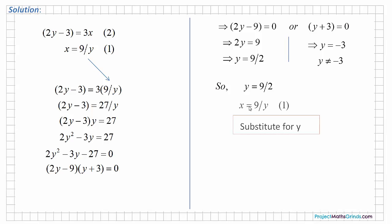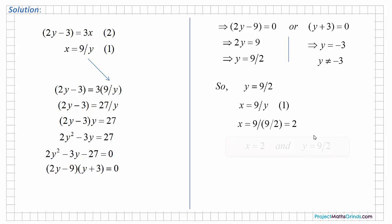Substituting this value back into equation 1, x equals 9 over y, which is 9 over 9 over 2. The 9's cancel and we get x equals 2. So the overall solution is x equals 2 and y equals 9 over 2.